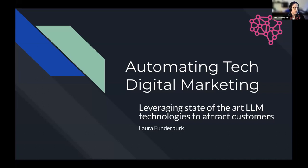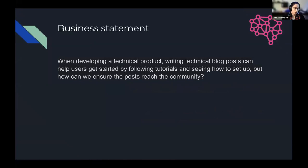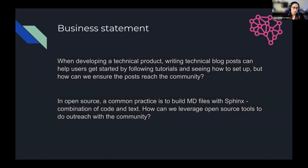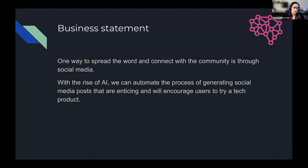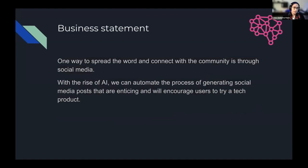What I explored here is finding ways to automate this communication piece. We're developing a technical product that involves having a technical blog post that can help people get familiar with the tool. The question is: how do we make sure those blog posts and tools are reaching the community? In open source, we build web pages through Markdown files using Sphinx — usually a combination of code and text. Now that AI is available, we can start automating the generation of social media posts.